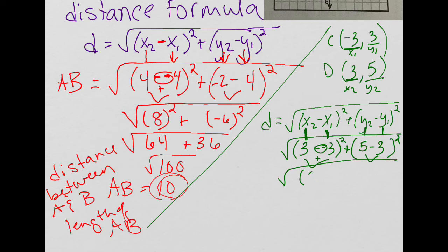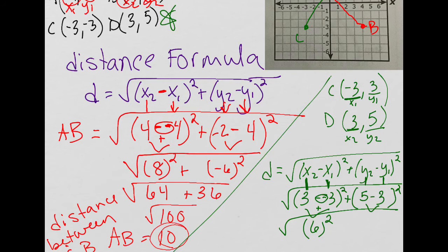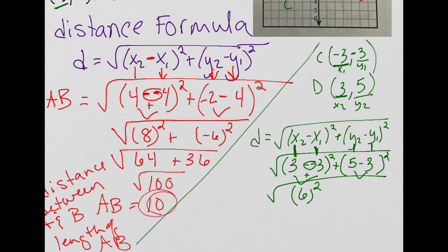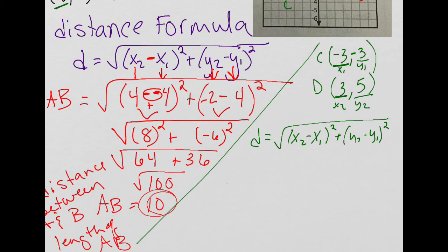I'm going to go back here. Hoping y'all caught it before I did. 3 plus 3 is 6, and I want to do 6 squared there. And then the other mistake I made was actually I copied down C wrong. C was actually supposed to be at negative 3, negative 3. So bear with me.